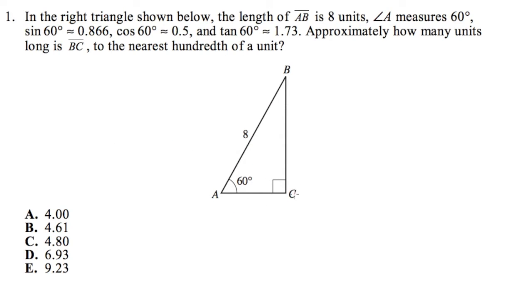For the first question, we are given this right triangle. We know that the length of AB is 8, and angle A measures 60 degrees. It also tells us the sine of 60 degrees, cosine of 60 degrees, and tangent of 60 degrees values. The question is asking us approximately how many units long is the segment BC.